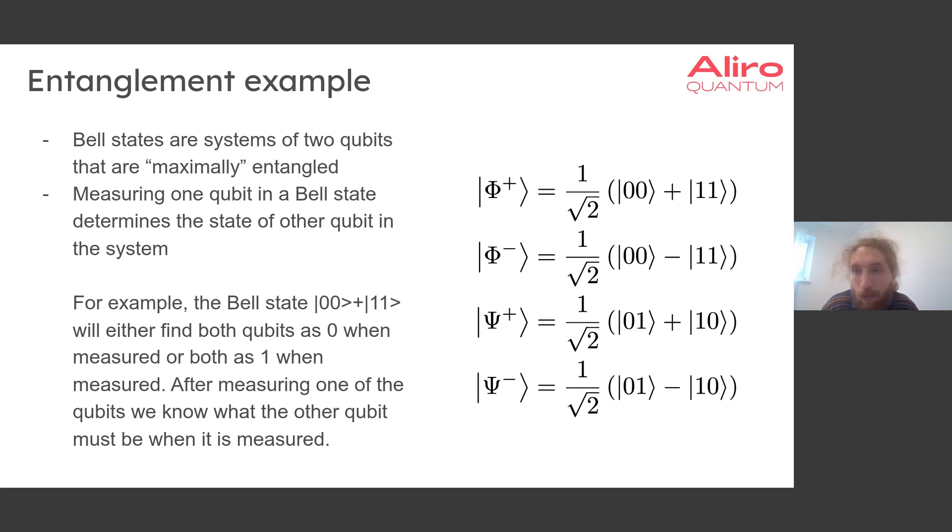Notice that in our Bell state example, measurement of one or both qubits changes our state. This is true for all four Bell states and generally for entangled states. The property of measurement changing entangled states is used in entanglement-based quantum communication to detect eavesdroppers, that is, unwanted measures of our quantum information. We will discuss this in more detail later in this webinar.